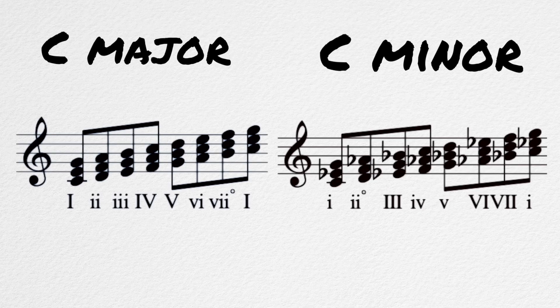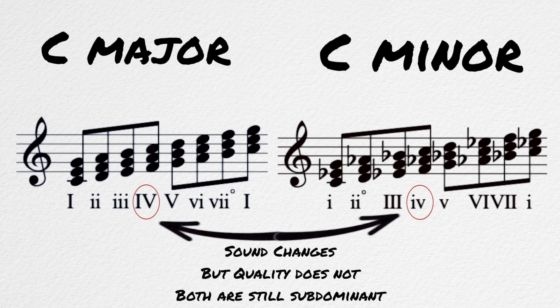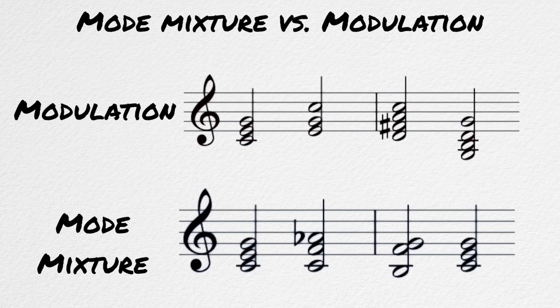For example, you are in the key of C major and you want to change up a subdominant chord. Instead of using the F major four chord, you could borrow the F minor four chord from the parallel minor key. An important aspect to remember is that mode mixture changes the quality of the chord, but not the function of that chord.